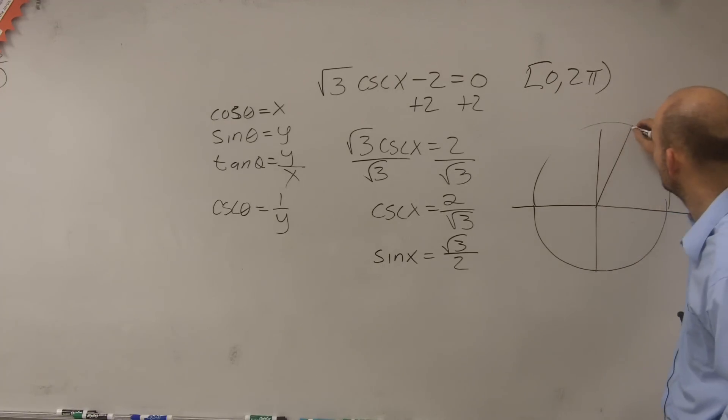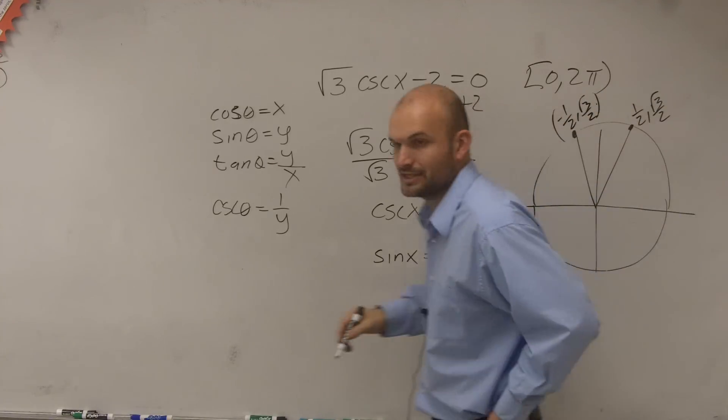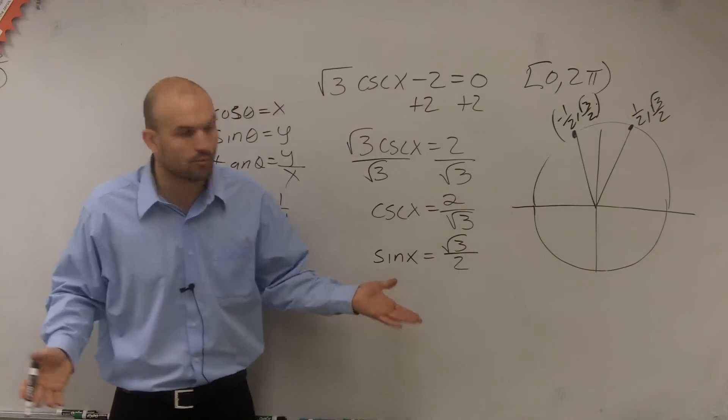At this point, we have 1 half comma square root of 3 over 2. And at this point, which we have negative 1 half comma square root of 3 over 2. So now we just need to know and remember, what are those two points?